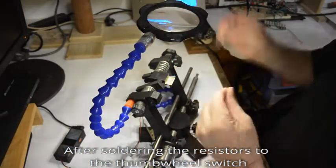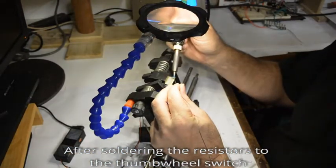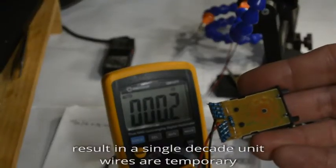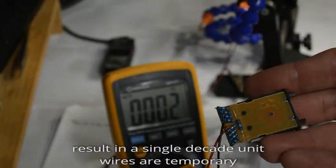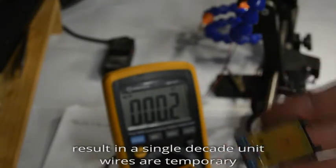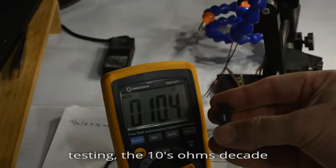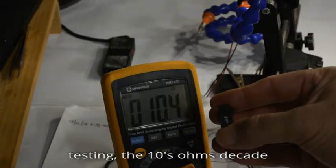So after soldering the necessary resistors to the thumb wheel switches, you should end up with a single decade that looks like this. The wires are temporary to enable testing of the decade, tens of ohms in this case, before moving on to the next unit.